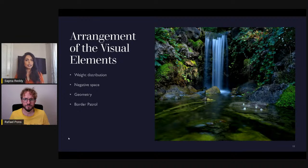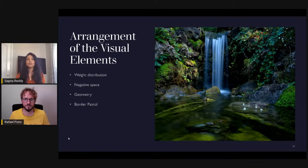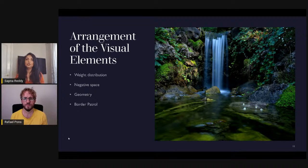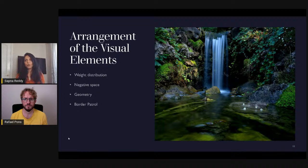Now that I've identified my focal points using brightness, contrast, color, and texture, my job is to arrange them in an aesthetic fashion. Under arrangement of visual elements I want to talk about: weight distribution, the use of negative space, how geometry can be used to create compelling images, and how to reduce distractions. When composing, look around the periphery — if something is attracting the viewer's eye to exit your frame, you need to reduce those distractions.